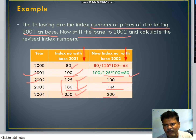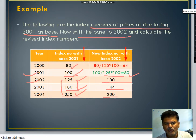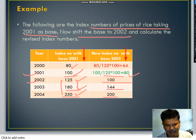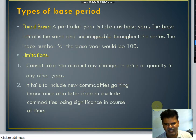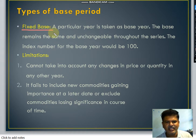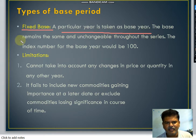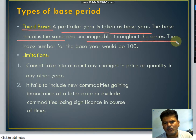In this way we can shift the base to the new year. This is one way of getting the new base index numbers. Now, what are the types of base year? There are two types: a fixed base year and a chain base year. In a fixed base year, a particular year is taken as the base, which remains the same and unchangeable throughout the series, with the index number for the base year set at 100.